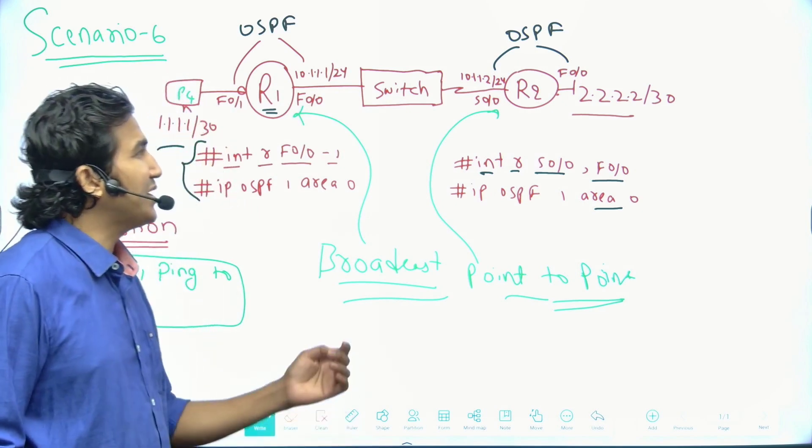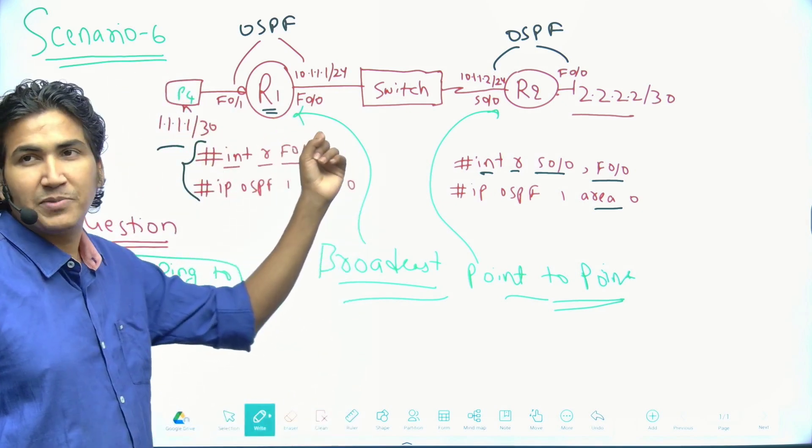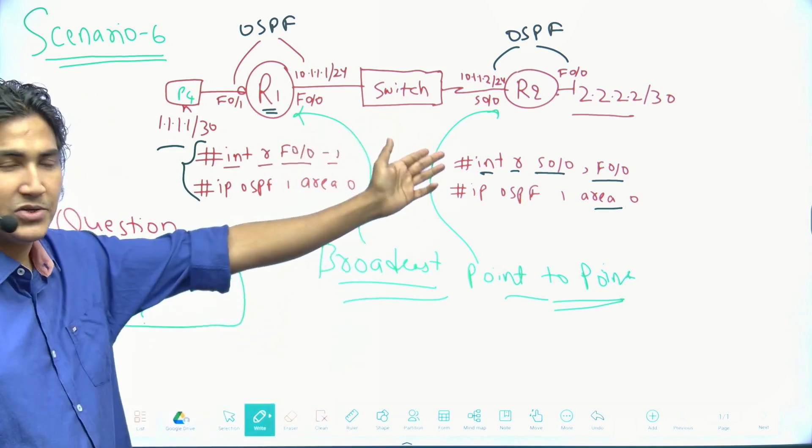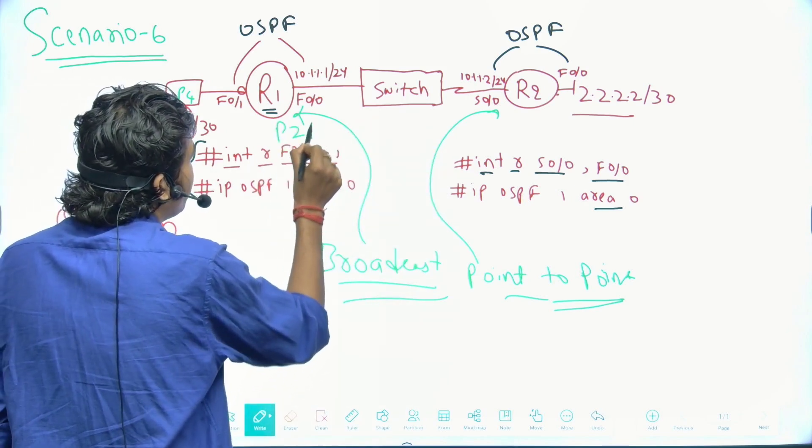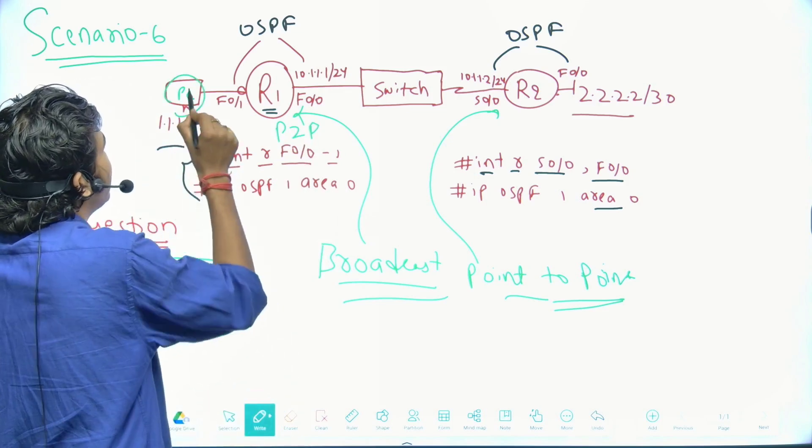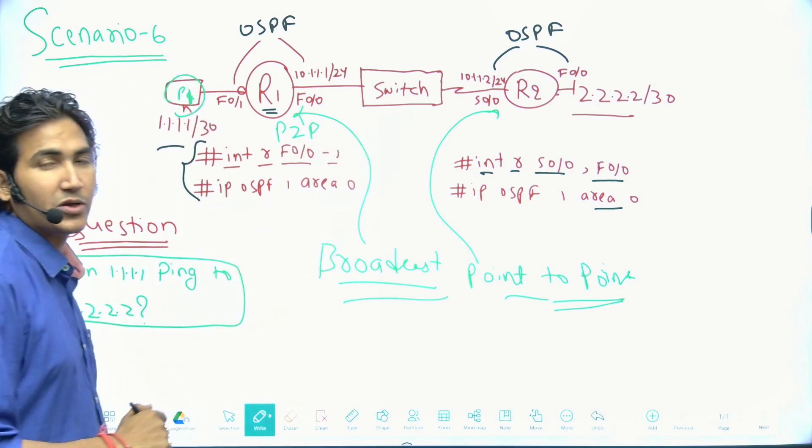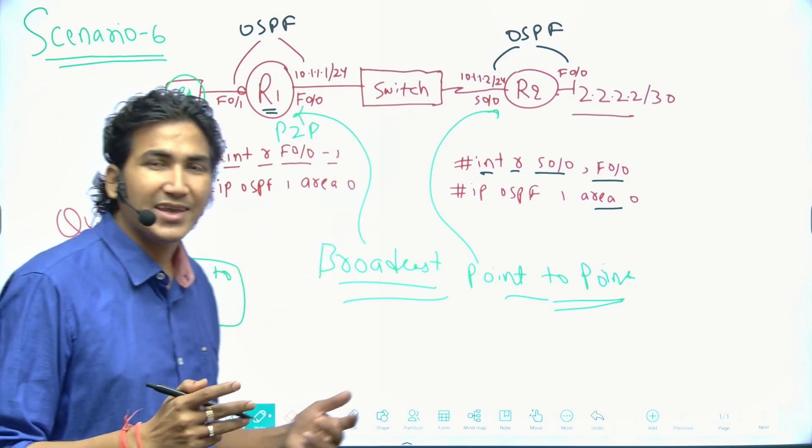To make communication possible between PC1 and PC2, what we can do is change the OSPF network type on router number one or on router number two. Here, if I configure network type point-to-point, then this PC, PC1 and PC2, 1.1.1.1 and 2.2.2.2 can easily communicate with each other.